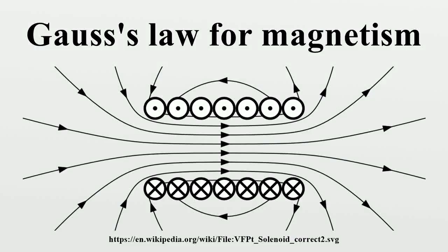In physics, Gauss's law for magnetism is one of the four Maxwell's equations that underlie classical electrodynamics. It states that the magnetic field B has divergence equal to zero, in other words, that it is a solenoidal vector field. It is equivalent to the statement that magnetic monopoles do not exist, rather than magnetic charges. The basic entity for magnetism is the magnetic dipole. Gauss's law for magnetism can be written in two forms, a differential form and an integral form. These forms are equivalent due to the divergence theorem.